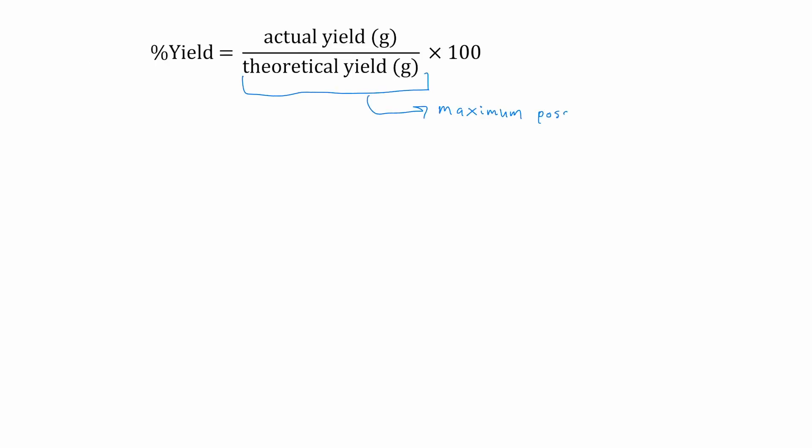The percent yield of a reaction gives an idea of how successful the synthesis was. To find percent yield, you'll need to first calculate theoretical yield. The theoretical yield is the maximum amount of product that could be obtained based on how much starting material was used.